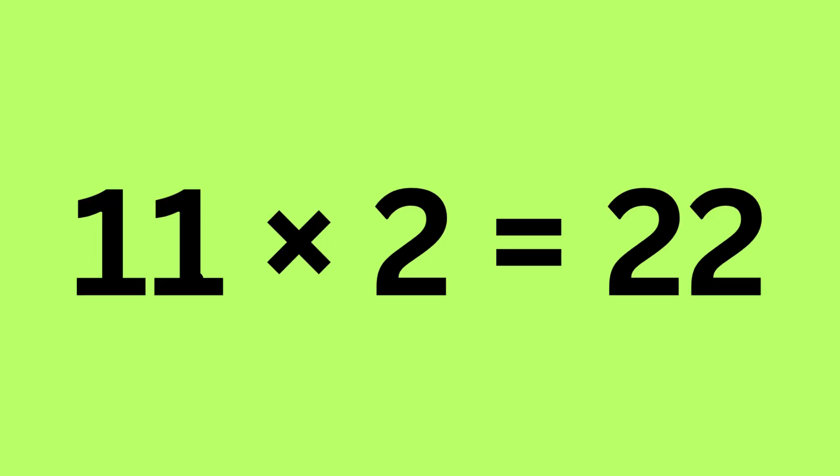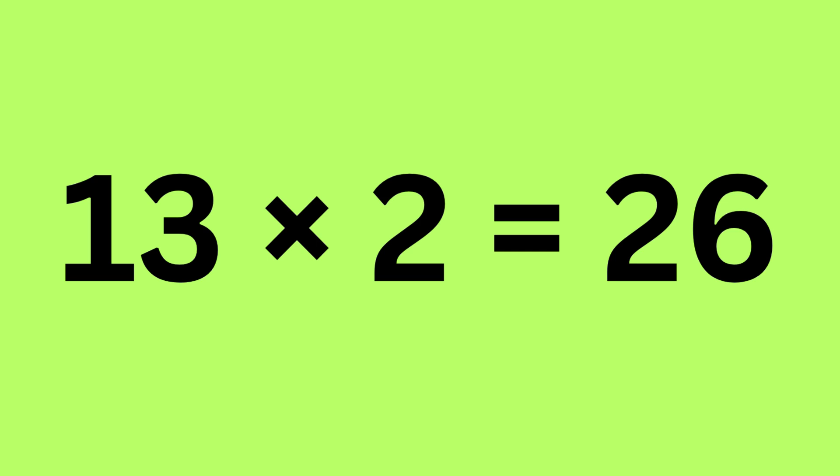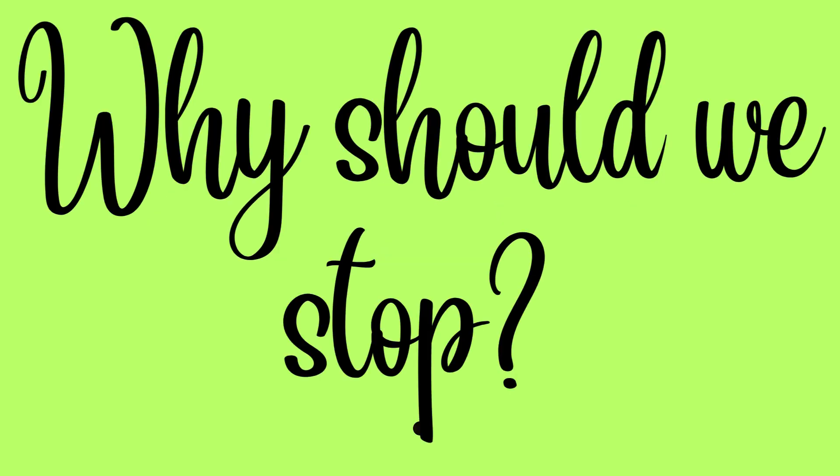11 times 2 is 22, 12 times 2 is 24, 13 times 2 is 26, 14 times 2 is 28. Why should we stop?